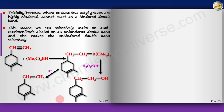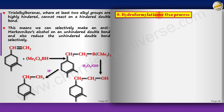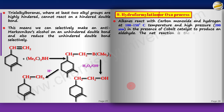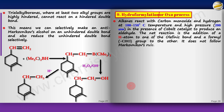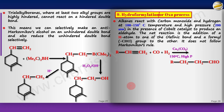The next reaction is hydroformylation, also called the oxo process. Alkenes react with carbon monoxide and hydrogen at 100–150 °C and high pressure in the presence of a cobalt catalyst to produce an aldehyde. There is no mechanism to remember — just remember the reaction: alkene + CO + H2 under high T and P gives a product where a CHO group is attached.